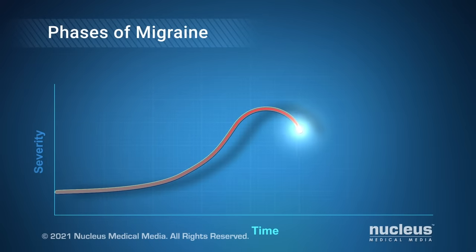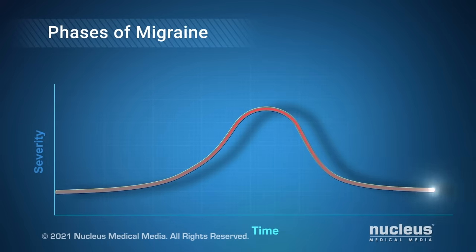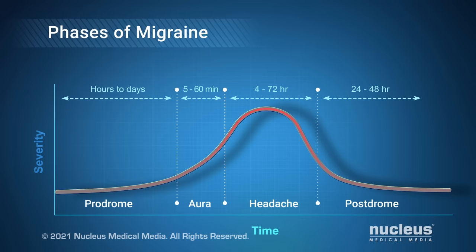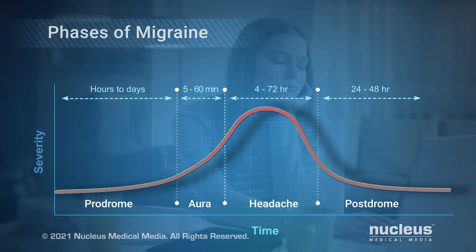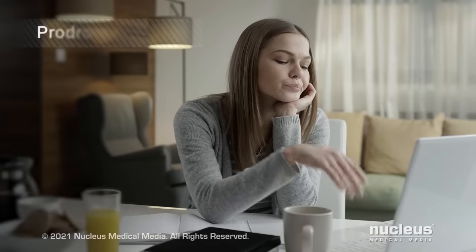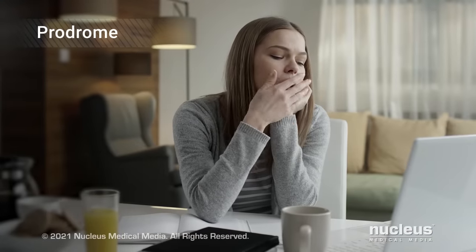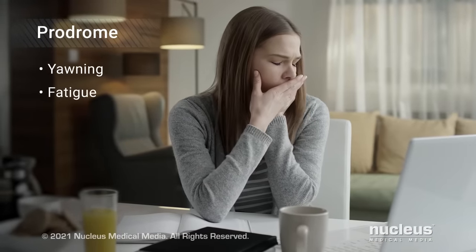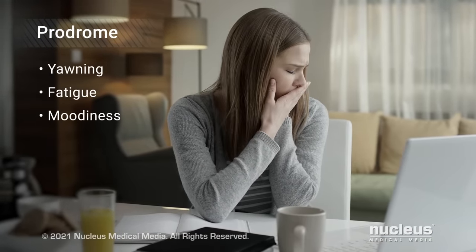Each attack typically has three or four phases. The typical phases of a migraine attack are prodrome, starting hours before a headache, aura, headache, and postdrome. Prodrome includes subtle symptoms such as yawning, fatigue, or moodiness.